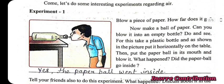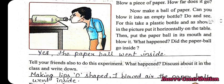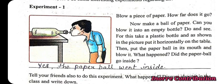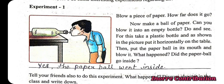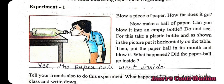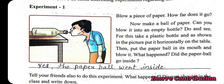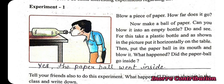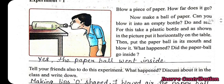Experiment 1: Blow a piece of paper — how far does it go? Now make a ball of paper. Can you blow it into an empty bottle? Take a plastic bottle, put it horizontally on the table, then put the paper ball in its mouth and blow it. The paper ball went inside.